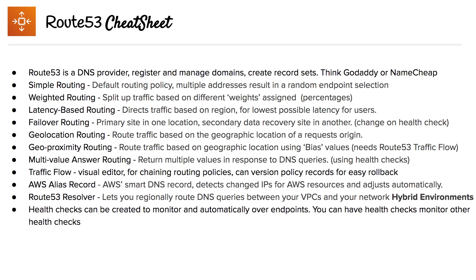There are seven different types of routing policies. Starting with simple routing policy, which allows you to input a single or multiple IP addresses to randomly choose an endpoint at random. Then you have weighted routing, which splits up traffic between different weights assigned — so percentages.